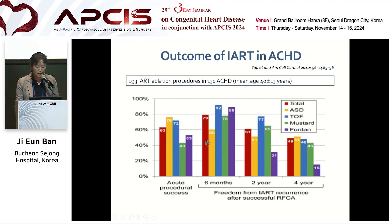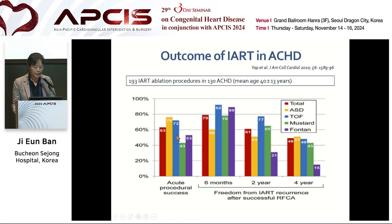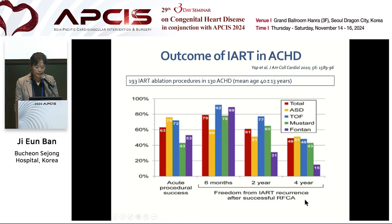This figure shows outcome of IART ablation in adult congenital heart disease. A total of 193 IART ablations were analyzed. Red bar is the total patient group, yellow is ASD, blue is TOF, green is Mustard repair, and purple is the Fontan group. Acute procedure success was 63% in the total group. IART recurrence was 48% at four years after successful ablation.